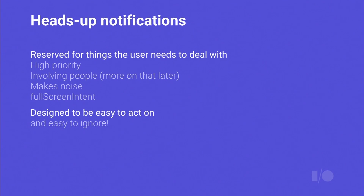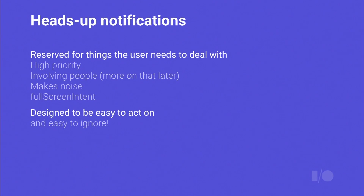Heads-up notifications have been added to L to make it easier for important things to get in front of the user without taking you out of context. In the past, an incoming phone call while you're playing a game would pause that activity. With heads-up notifications, important things get the user's attention without stealing focus from the app. When it pops up, you can ignore it, swipe it away, push it back into the notification shade, or act on it by clicking an action button. We use these for high-priority notifications, notifications involving people, notifications that buzz or make noise, or those that would use full-screen intent.